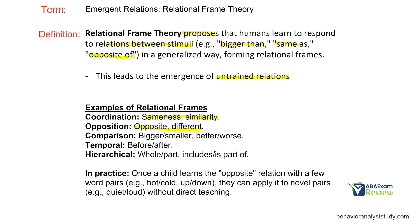In practice, how do emergent relations form? Think about a child who learns opposites — hot/cold, up/down — and then applies it to quiet/loud without direct teaching. They've taken that frame and identified more opposites. If you want to look in Cooper, they go into much more detail. While studying for your exam, I don't recommend going down this rabbit hole. If you feel 100% fluent, or once you pass your exam, definitely go read up on it — it is very interesting.